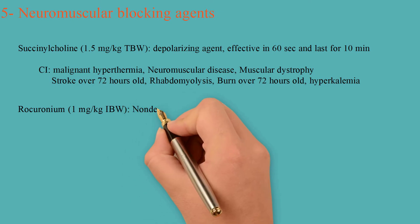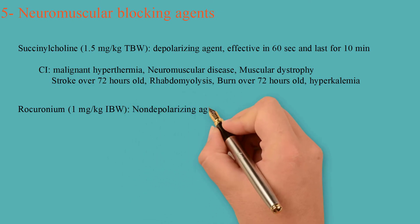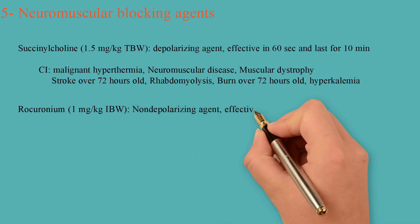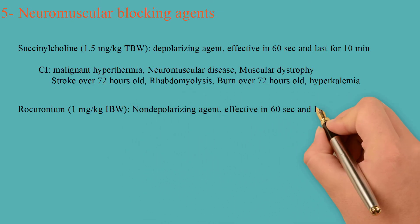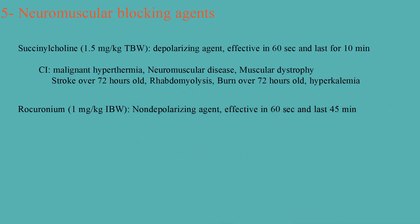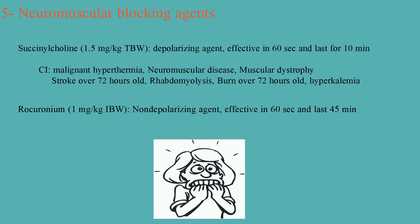The second neuromuscular blocking option is the non-depolarizing agent rocuronium, with much fewer contraindications, at 1 mg per kg of ideal body weight. It can also achieve paralysis in 60 seconds, but will last for 45 minutes.